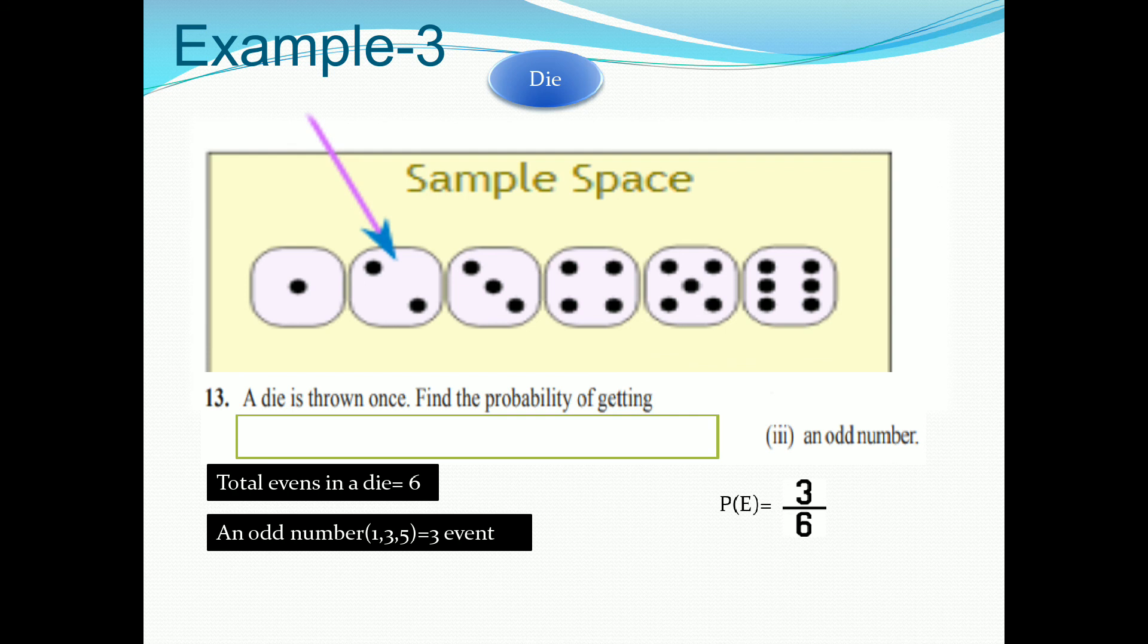So from this example also, if you throw a dice 6 times, 3 times you will get the odd numbers. So these are showing the possibilities of odd numbers. Now next.